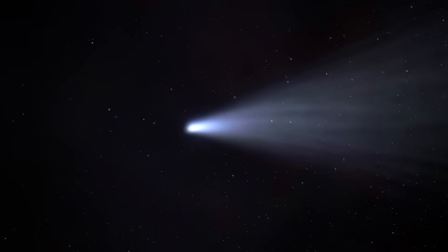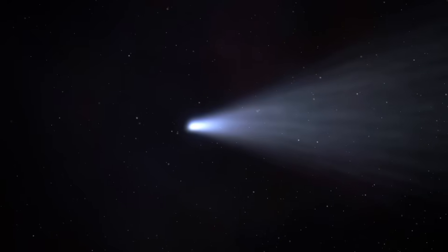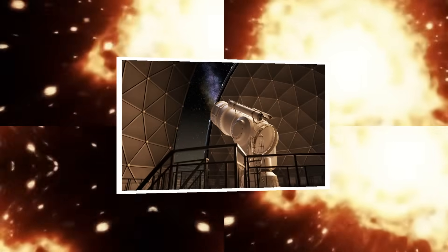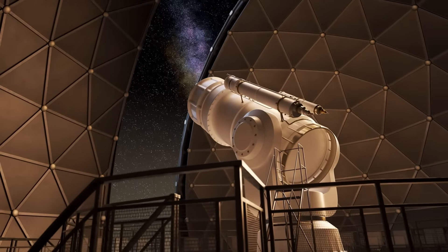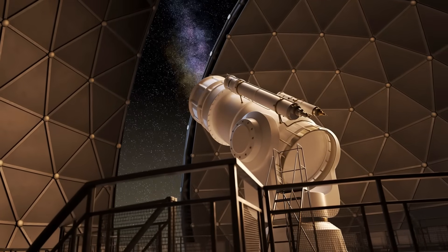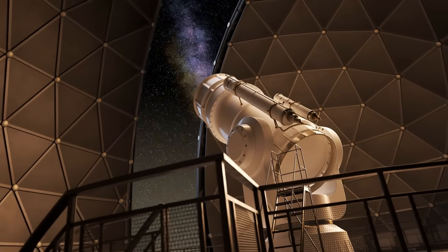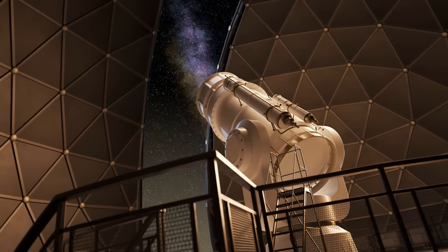This kind of violent outgassing, thousands of times more powerful than any comet from our own solar system, is usually a death sentence. The intense internal pressure should have been enough to shatter it into a million pieces. The world's telescopes watched and waited for the inevitable break-up, for the tell-tale signs of fragmentation. But to the absolute shock of everyone, it never happened.